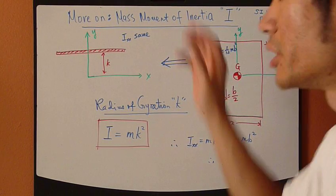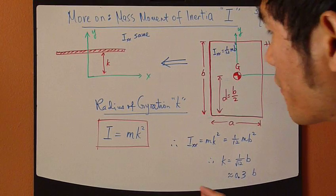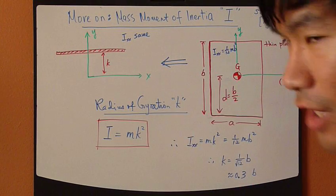One more thing about moment of inertia is that sometimes in the problem, you're given something called radius of gyration.